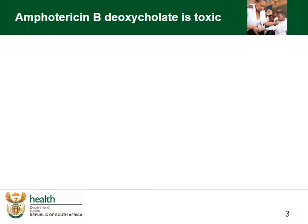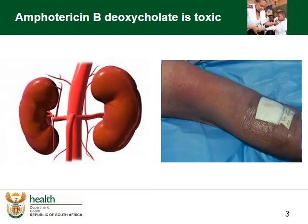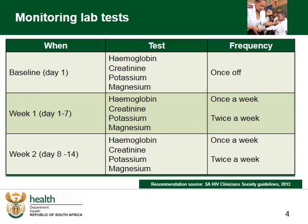As outlined in the previous module, Amphotericin B is toxic, with the most dangerous complications being renal impairment due to renal tubular toxicity and the more common problem of thrombophlebitis. This is a slide from the previous module reminding us of the monitoring bloods that need to be taken on patients on Amphotericin B. But how do we respond if we find an abnormal result?